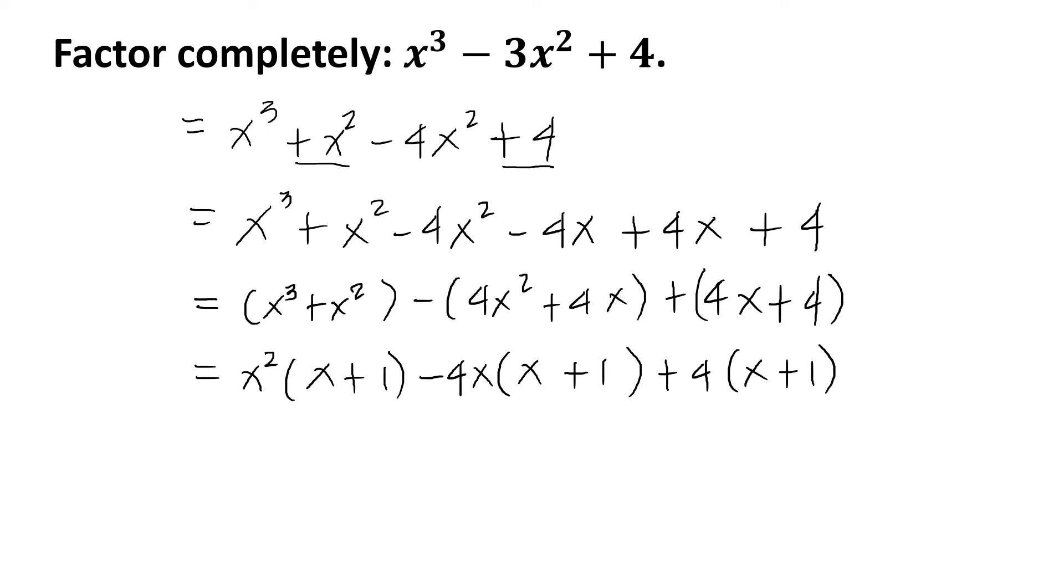Notice that the binomial x + 1 is common to the three resulting groups in our expression. Then x + 1 is a common binomial factor. So we have (x + 1) times the quantity (x² - 4x + 4).